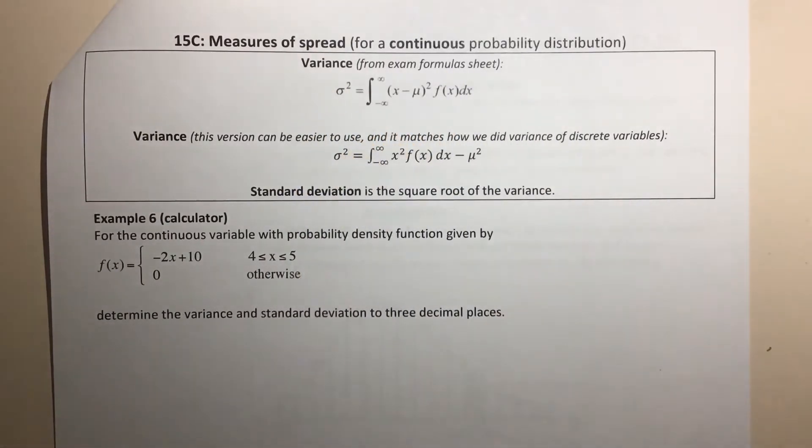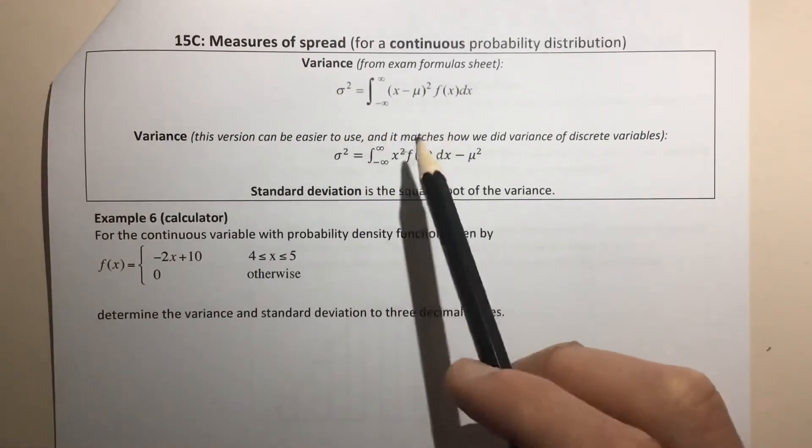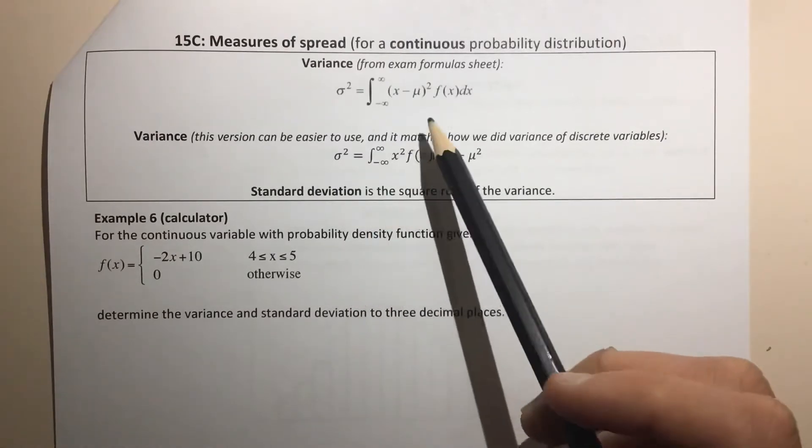Again, a bit like the expected value, there's a formula for the variance that we use. There's sort of two versions of it, and which one you use can just depend on what you think is going to be easier.